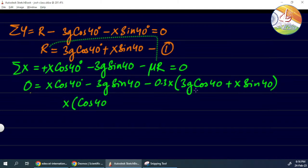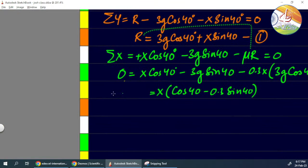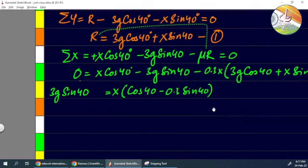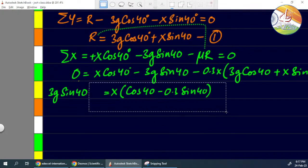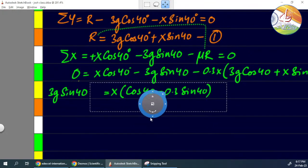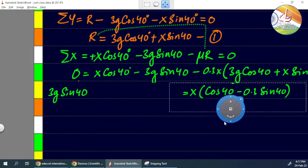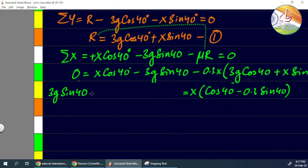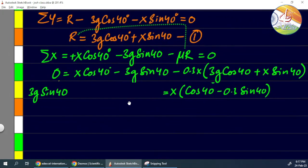X cos 40 will stay here, and then this side X is there, so we will get minus 0.3 sin 40. This will stay on the right side. We will send the constant terms to this side, so we get 3g sin 40. We will need some space here. Let's move this side. So 3g sin 40 has become positive on the left side.